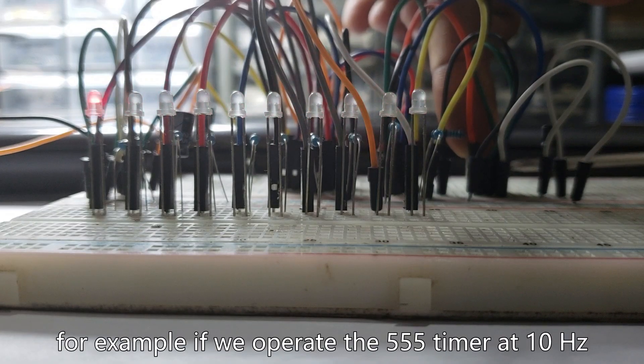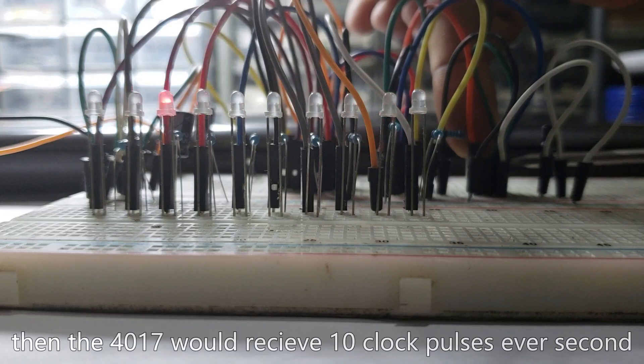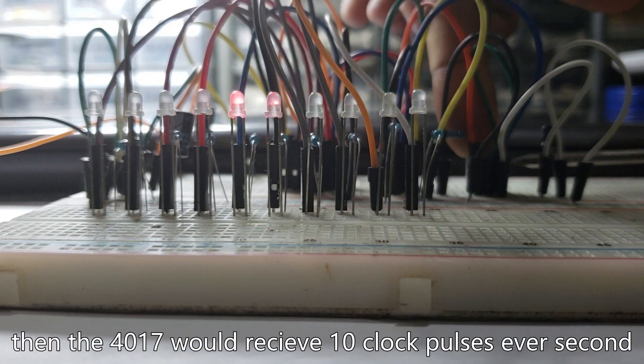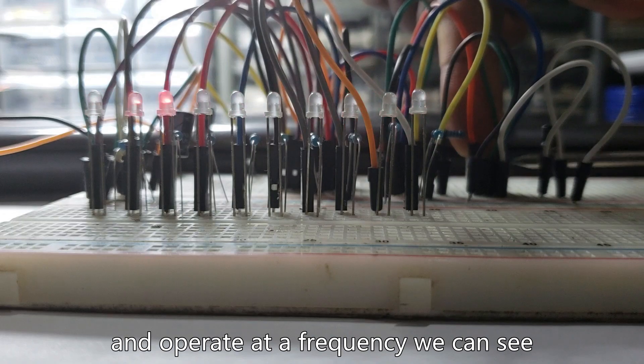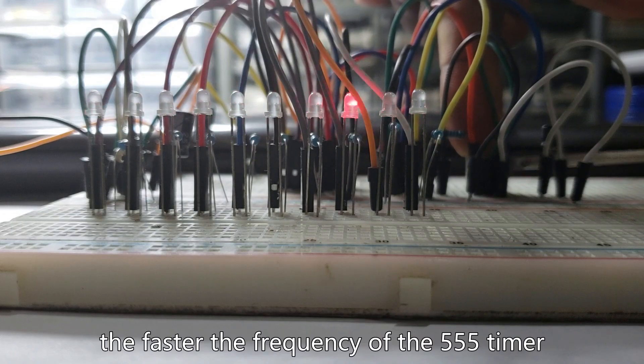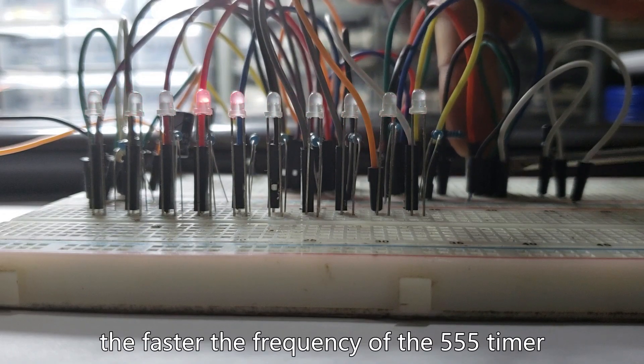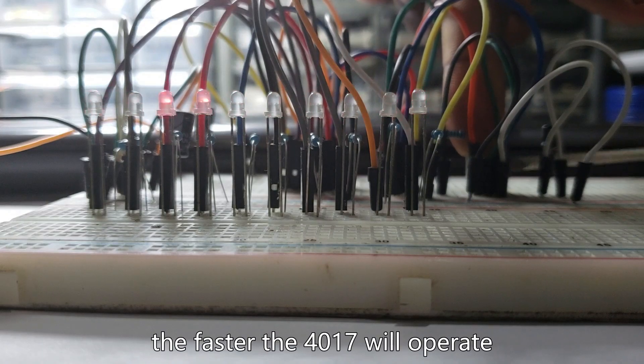For example, if we operate the 555 timer at 10Hz, then the 4017 would receive 10 clock pulses every second and would operate at the frequency we can see. The faster the frequency of the 555 timer, the faster the 4017 will operate.